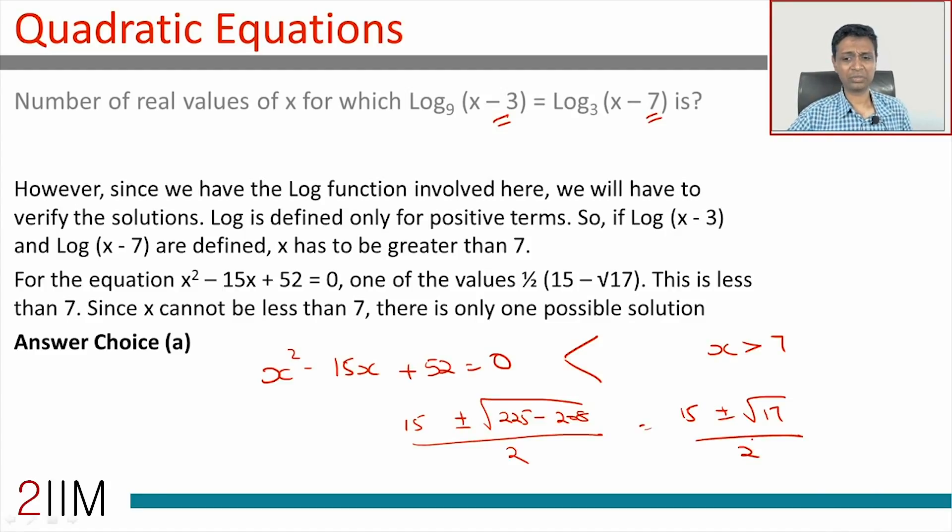For (15 + √17)/2, since √17 is roughly 4, that works. For (15 - √17)/2, that's (15 - 4)/2 = 11/2 = 5.5, which won't work. So x has to be greater than 7.